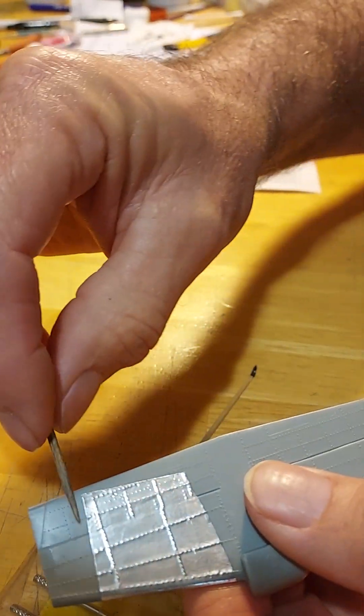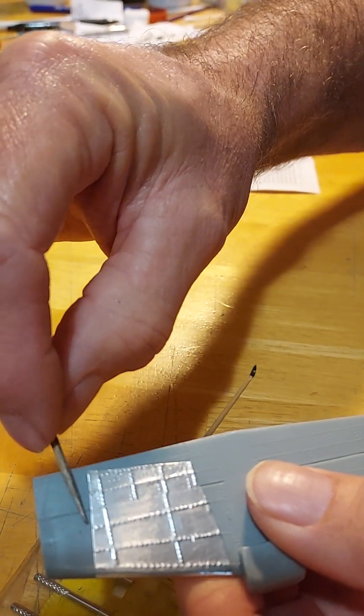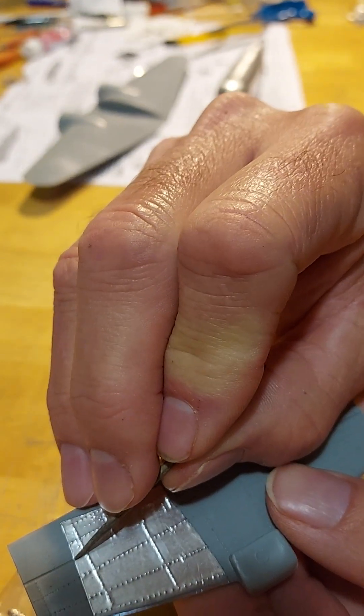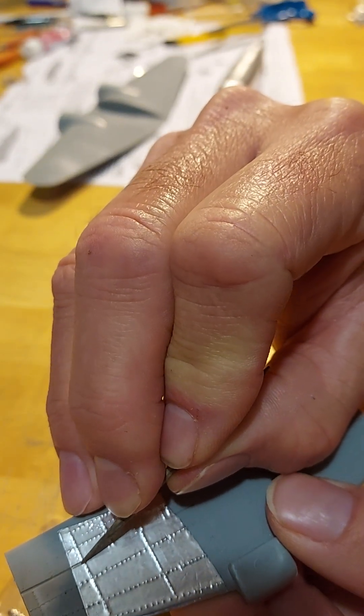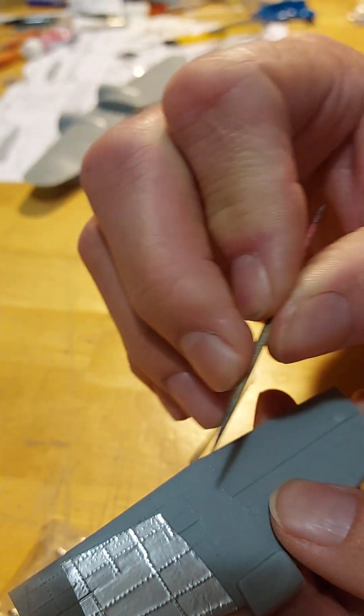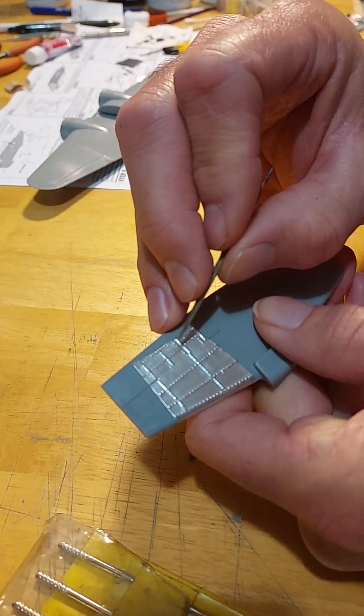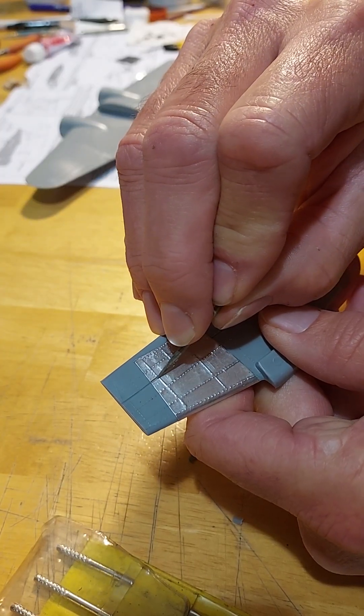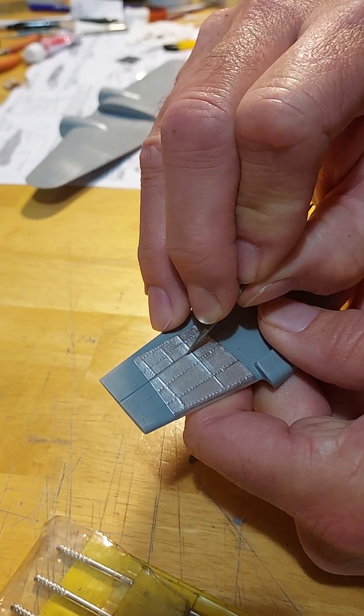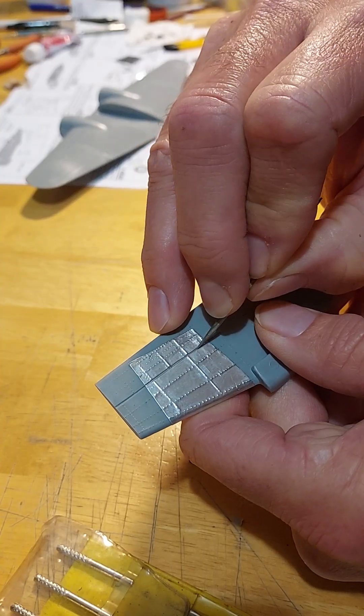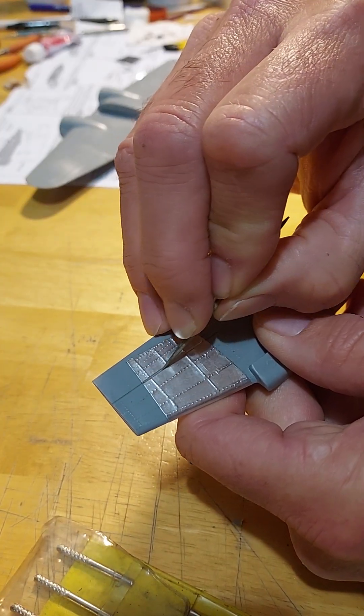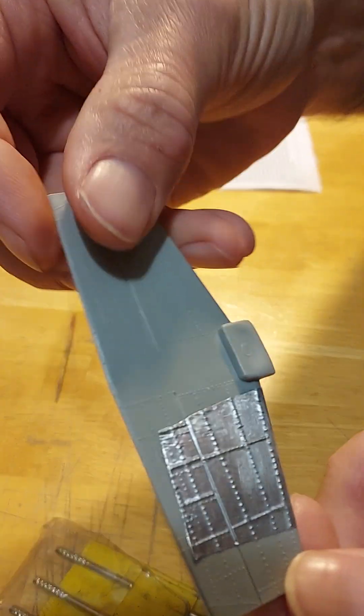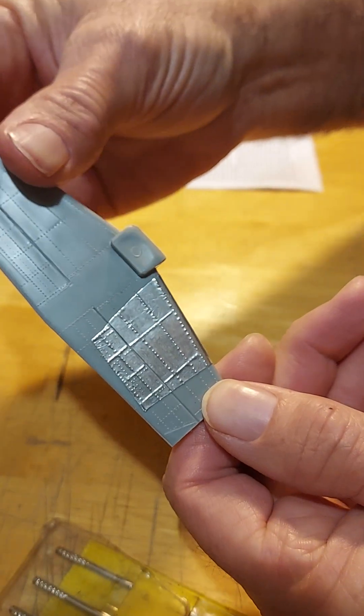Now, what I do for where the elevator meets the horizontal is I'll take the point end of the toothpick, and I will take and run that right in and along that groove. So see, we've got that detail now. It looks fantastic.